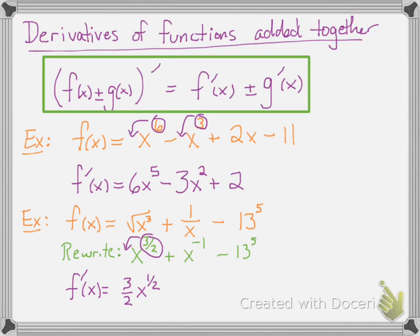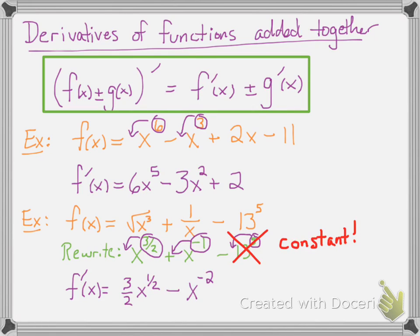Bring that 3-halves down in front and subtract 1 from the exponent, so it's 3-halves x to the 1-half power. For derivative of x to the negative 1, that negative 1 comes down in front — the plus becomes a minus — and subtract 1 from the exponent, so it's x to the minus 2. Now for 13 to the fifth: that's a constant, not x to the fifth power, so its derivative is 0. You don't have to write 0 — just erase that. And there's your final answer.